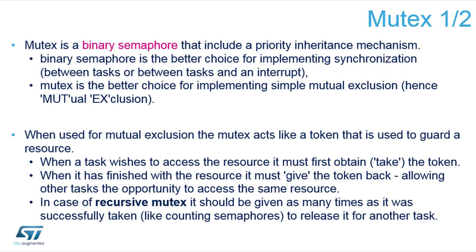So we will create a mutex that will guard the UART — we can call it, for example, a UART mutex. It will define an object on the heap. Now if task one wants to use the UART, it first has to have the token, so it will try to acquire the mutex. If it is able to get it, it will use the UART. If the mutex is not present, the task will get blocked and cannot continue or use the UART.